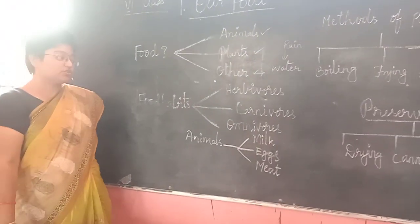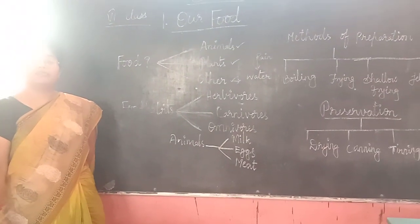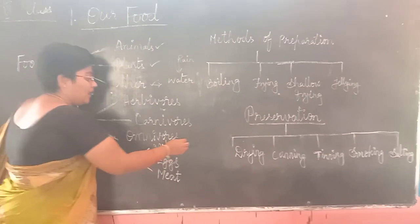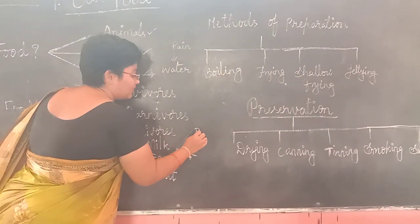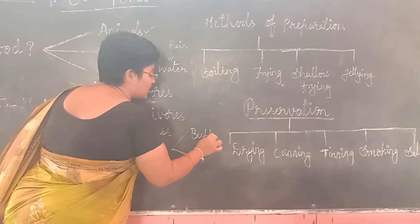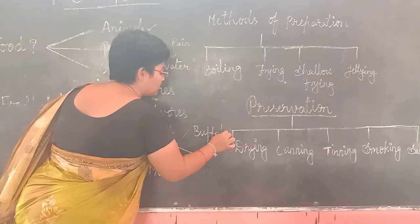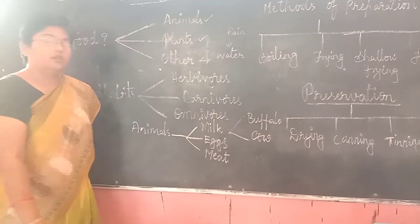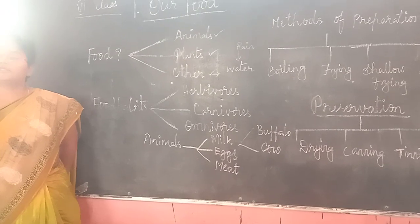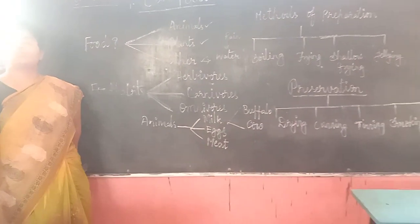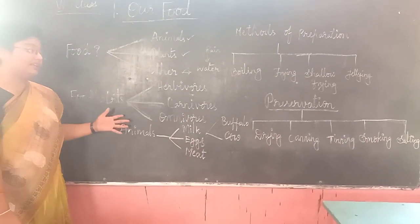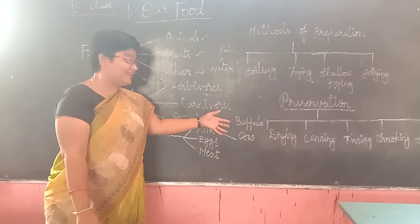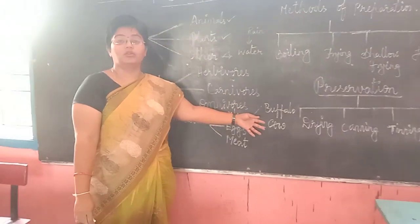Some examples of milk-giving animals familiar to us are nothing but buffalo and cow. In our surroundings, we used to see most of these familiar animals like buffalo and cow.